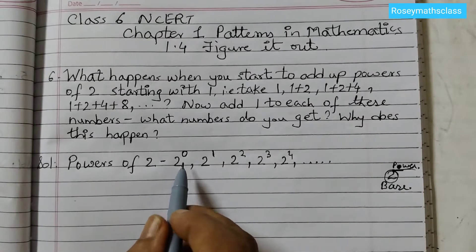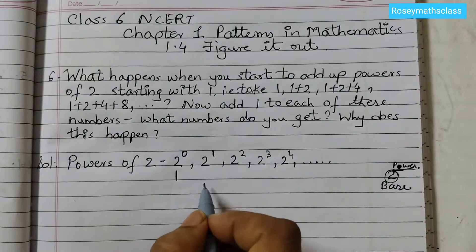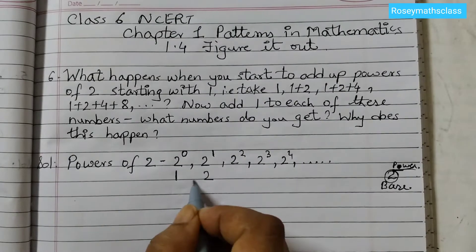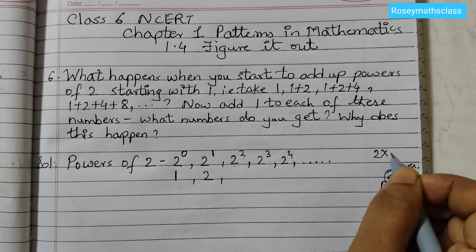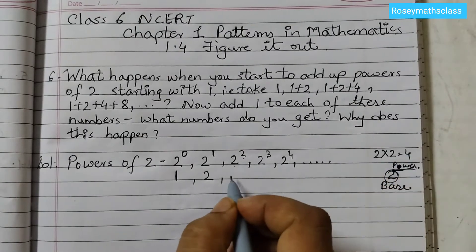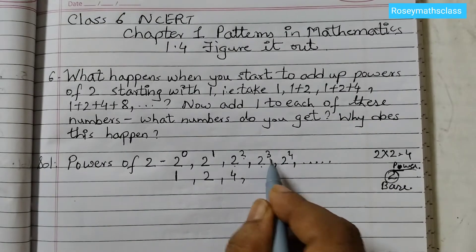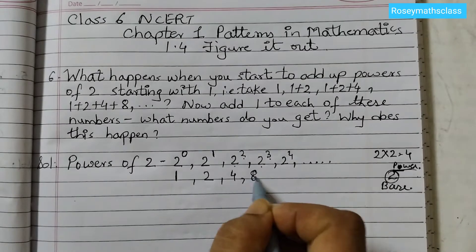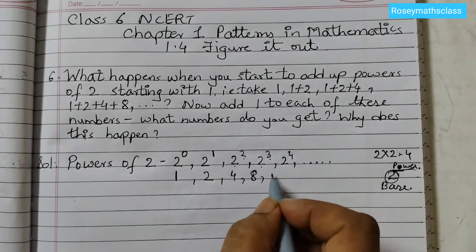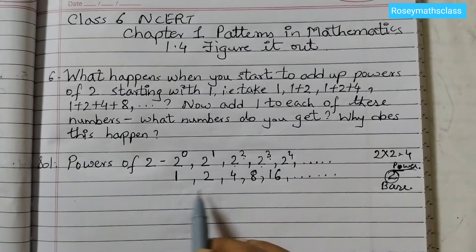Now what is the value of 2 raised to the power of 0? That is 1. 2 raised to the power of 1 is 2. 2 raised to the power of 2 means 2 into 2 which is 4. 2 raised to the power of 3, that means 2 is multiplied 3 times. So 2 into 2 into 2 is 8. 4 times when we multiply we will get 16. So these are the powers of 2.